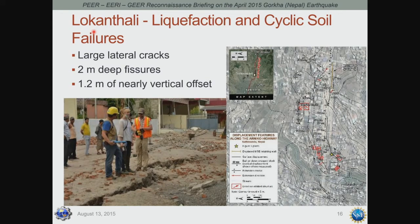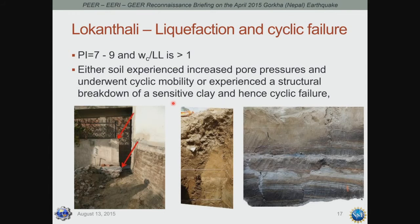The most observable case was in Locanthali, on the eastern side of the basin, where liquefaction and cyclic soil failures occurred. There were large lateral cracks, and a map was produced by the team showing all the cracking and details of movement. Deep fissures were observed as deep as two meters, with vertical offsets in some areas of about 1.2 meters — quite dramatic. The first team documented this initially, and the second team conducted more detailed investigations, including trenching to examine offsets in soil layers and sampling to characterize the soils.